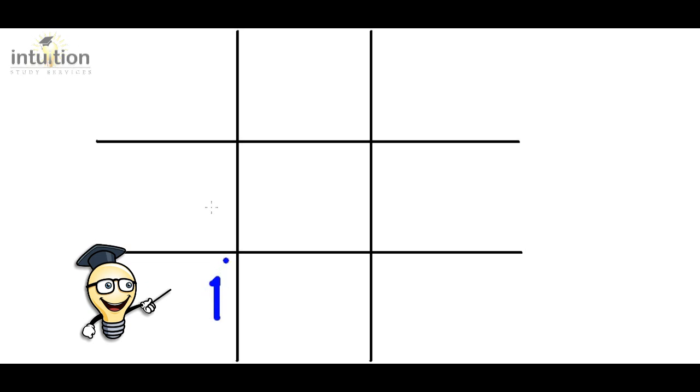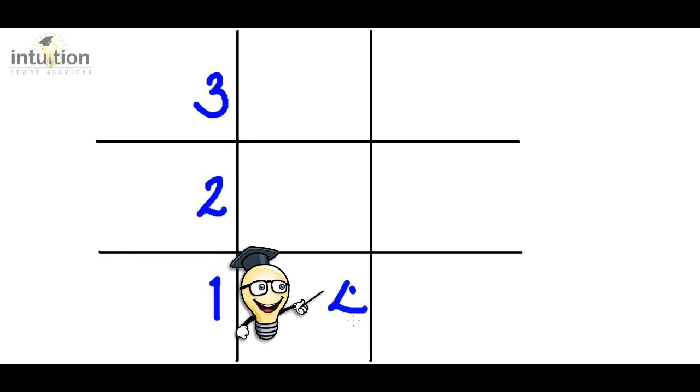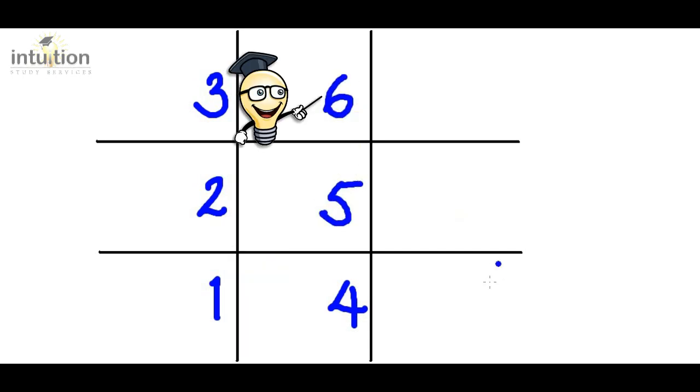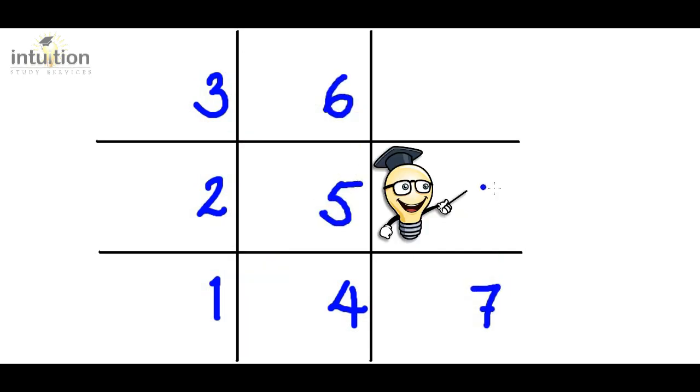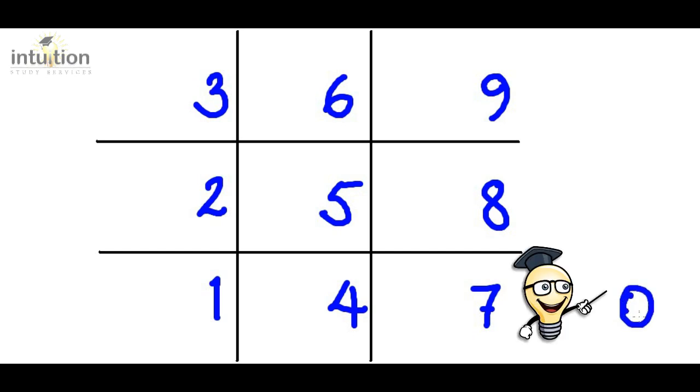So we'll put 1, 2, 3, 4, 5, 6, 7, 8, 9. And then finally instead of writing 10 we just put 0 to represent the 10 on the outside.